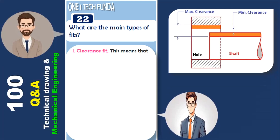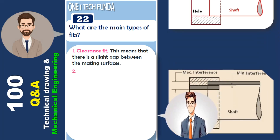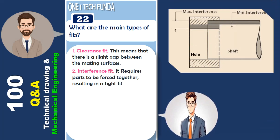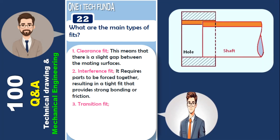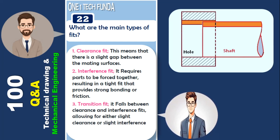Clearance fit means there is a slight gap between the mating surfaces. Interference fit requires parts to be forced together, resulting in a tight fit that provides strong bonding or friction. Transition fit falls between clearance and interference fits, allowing for either slight clearance or slight interference depending on the manufacturing variations.